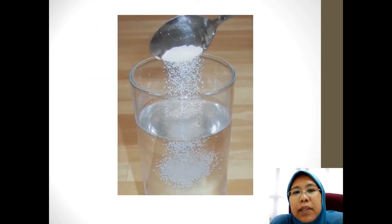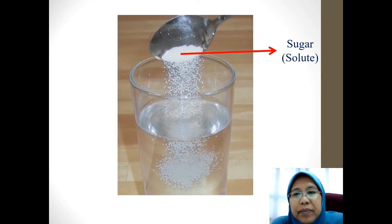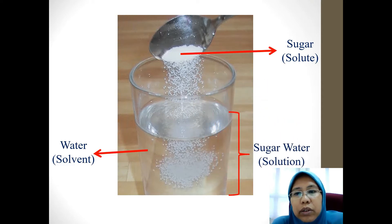This is an example of a solution being made. In the spoon is sugar - it's a solute. Water is already in the glass. That is the solvent because the quantity is a lot compared to sugar. Combined together, they are called solution. This is the sugar water which you will make before you pour in your cordial.